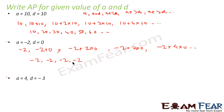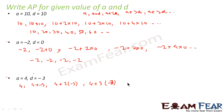One more example: A = 4, D = −3. The terms are: A = 4, A+D = 4+(−3) = 1, A+2D = 4+2×(−3) = −2, A+3D = 4+3×(−3) = −5, A+4D = −8, and so on. The AP is 4, 1, −2, −5, −8.